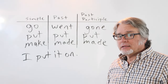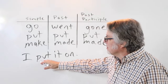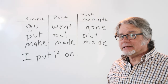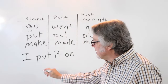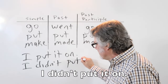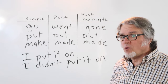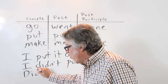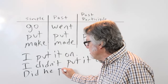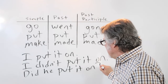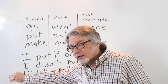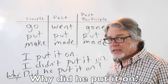I put it on — this is in the past tense. Here's the past tense verb. To make it negative, put 'didn't' in front of the simple form: I didn't put it on. And to form a question, use 'did' before the subject — we can use 'he' in this case: Did he put it on? And if it's a question for information, the question word would go here: Why did he put it on?